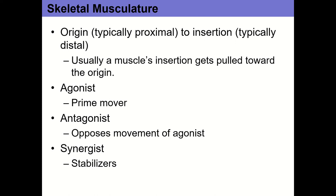The muscle's insertion typically gets pulled toward the origin, but from a practical sense that doesn't always happen. The classic example is if you do a bicep curl — that's straight elbow flexion, and you pull the radius toward the scapula. But if we change the exercise, if we have the athlete doing a pull-up, the forearm and hand are stabilized and the rest of the body moves. So in that case we actually pull the origin toward the insertion — a reverse action.